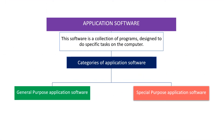The second type of software is application software. This software is a collection of programs designed to do specific tasks on the computer. The categories of application software are general purpose application software and special purpose application software.